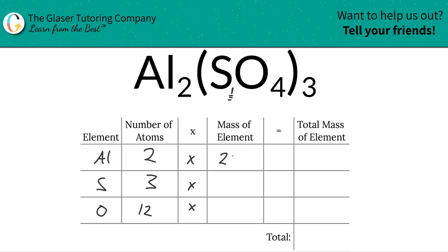So we write them down: 26.98 for aluminum, about 32.07 for sulfur — let's just double check — and oxygen is about 16. Depending on which table you use, the numbers might be ever so slightly different, but that's just because of where we decide to round.